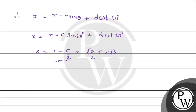Therefore x equals R minus R/2 plus R·root 3 by 2 · root 3, which simplifies to 2R. So the answer is 2R.